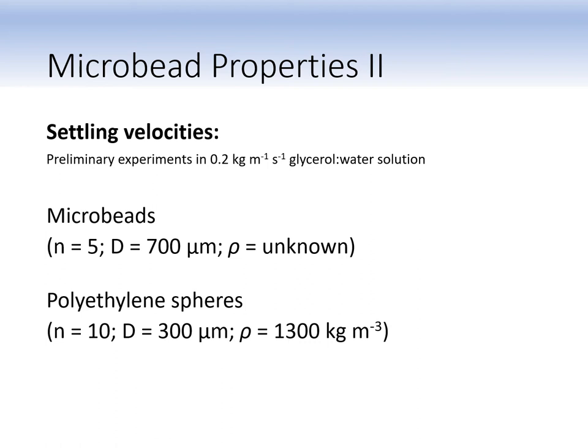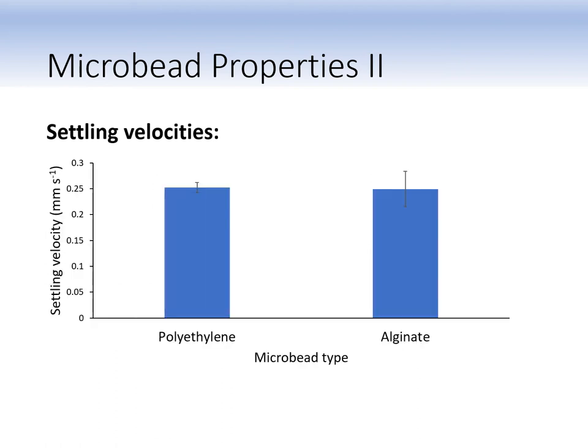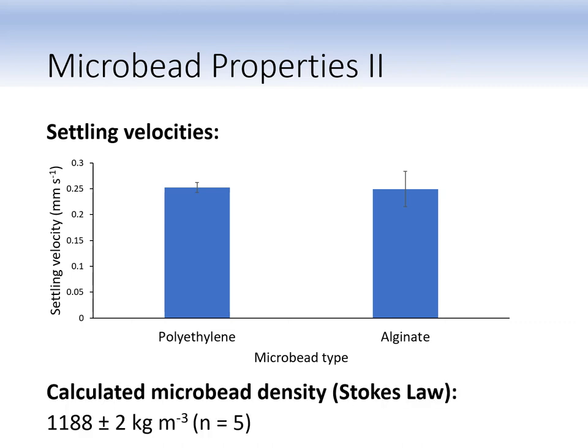To confirm that the microbeads were the correct density, we performed some preliminary settling velocity experiments in a 0.2 kilogram per meter per second glycerol-water solution. This viscosity allows us to calculate the microbead density properly using Stokes law. We compared the settling velocities of the alginate microbeads with a non-biodegradable standard, which was polyethylene spheres matched to the right density. The settling velocities were approximately equal between the two spheres, and the calculated microbead density was approximately 1200 kilograms per meter cubed.